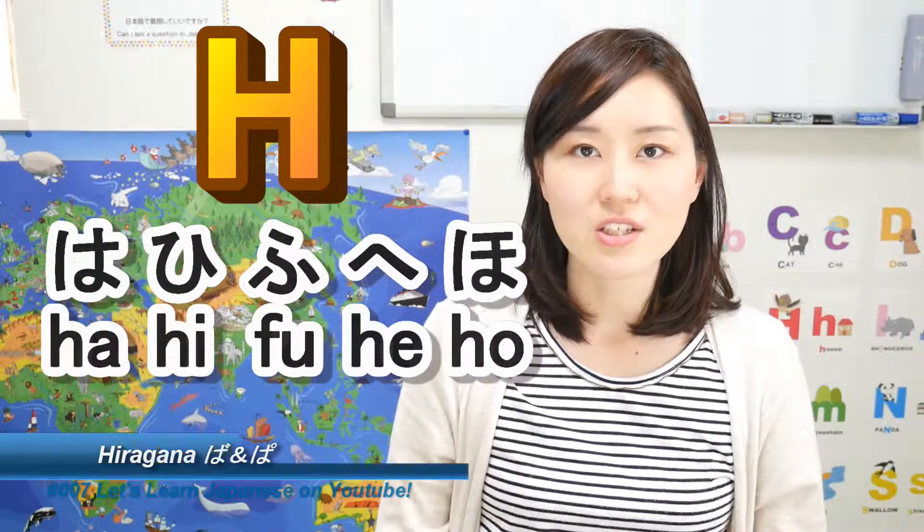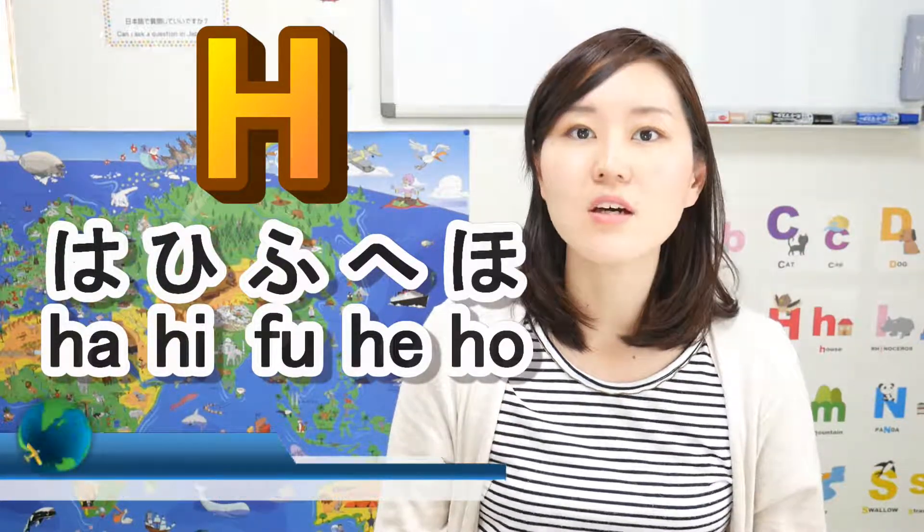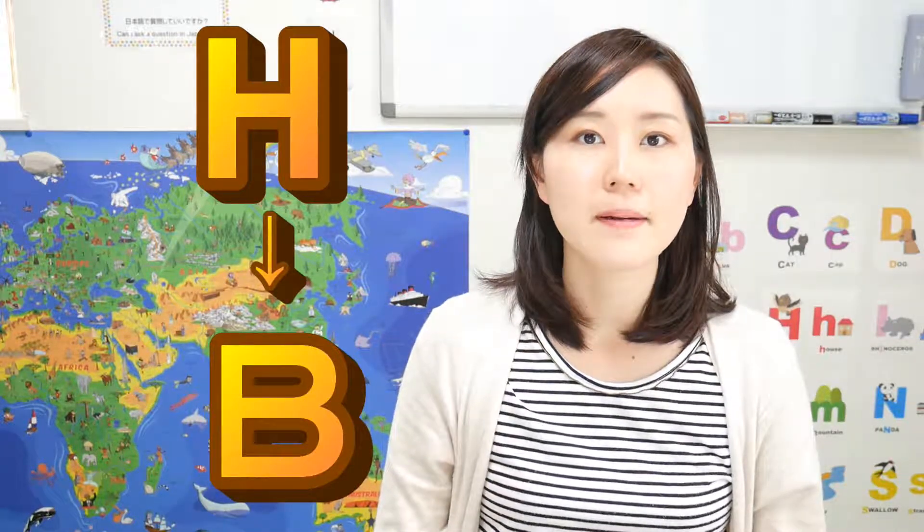H is also an unvoiced sound, right? But if you make that a voiced sound, in Japan we think of it as a B sound. So it goes like this: ba, bi, bu, be, bo.